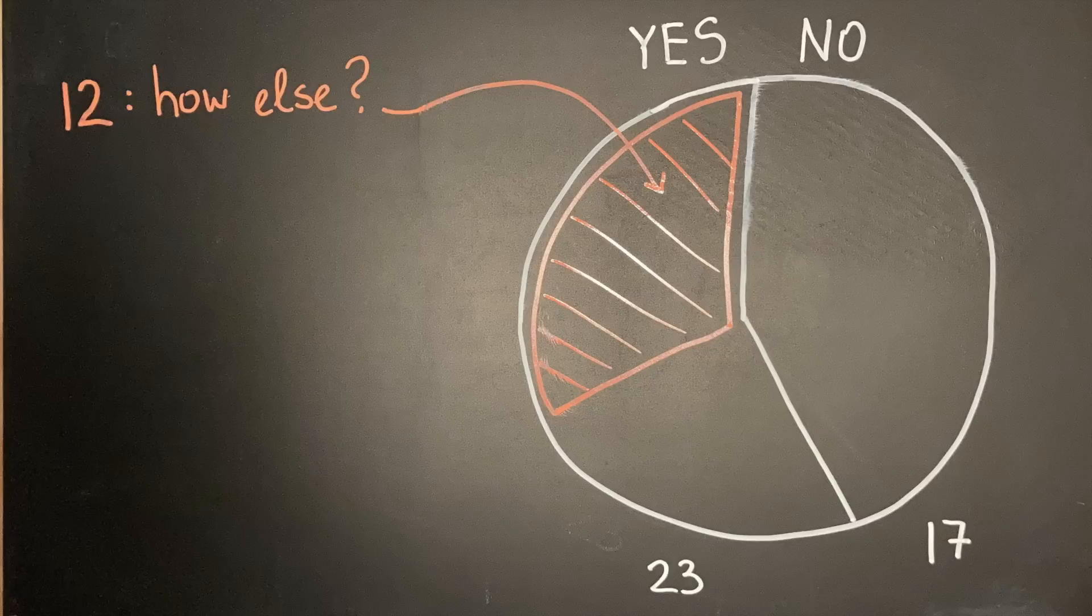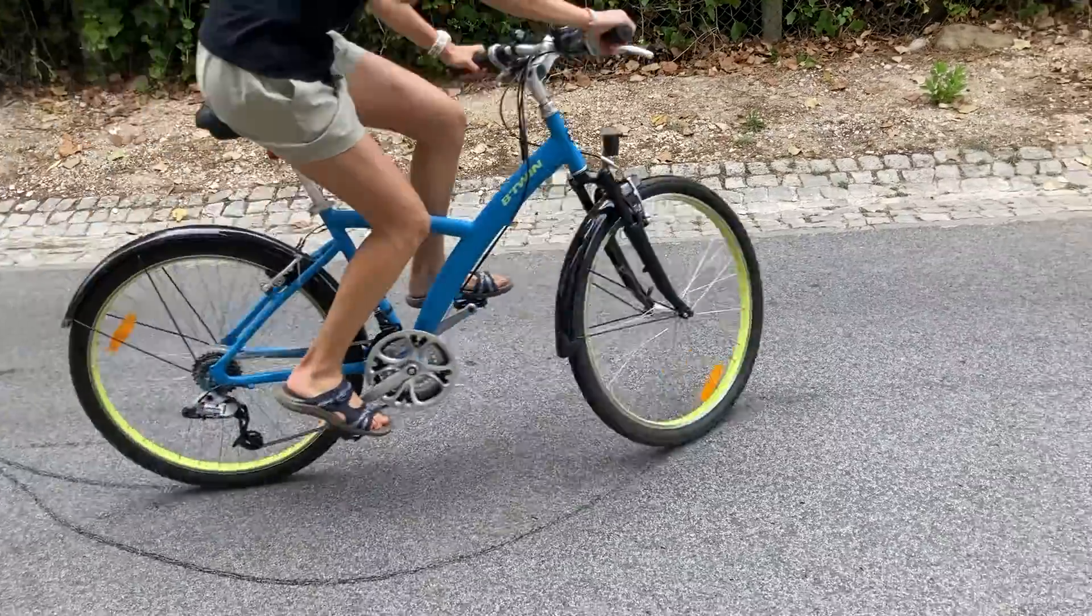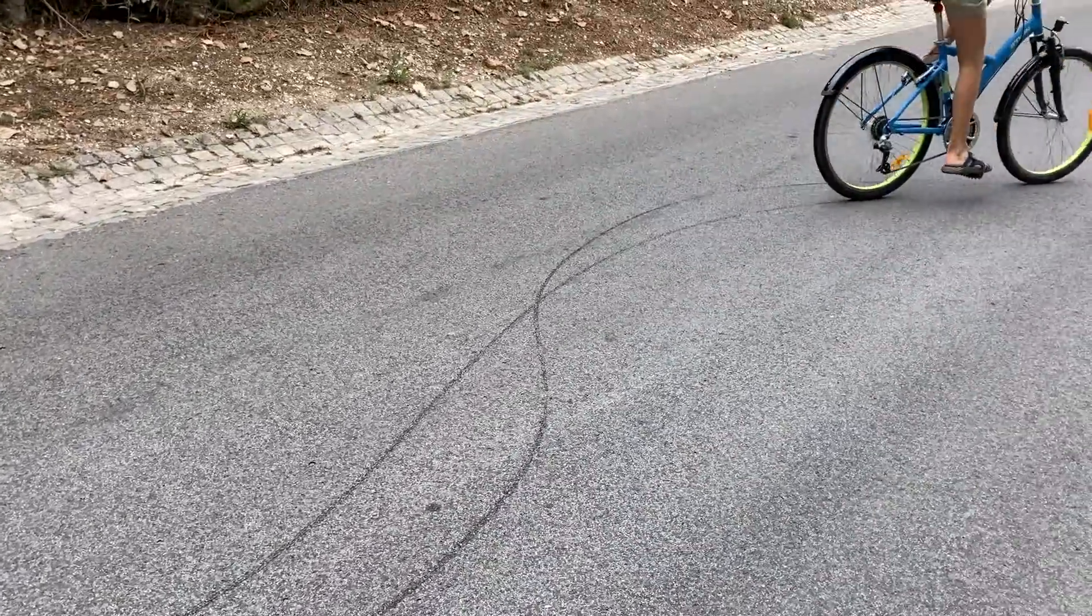The back wheel follows wherever the front wheel goes, so it should trace out the front wheel's track. Taking your bike on a ride through a puddle and looking at the wet tracks shows the error in this reasoning.